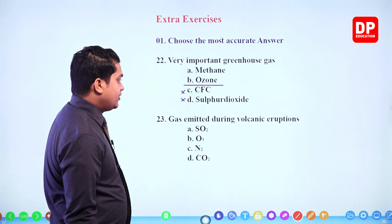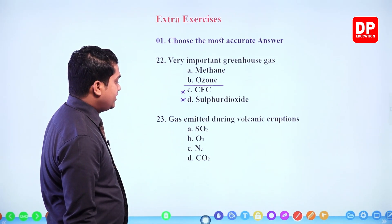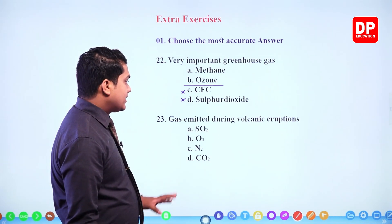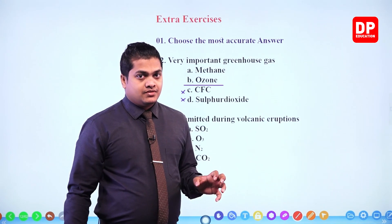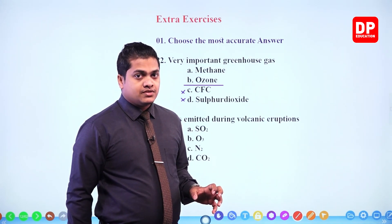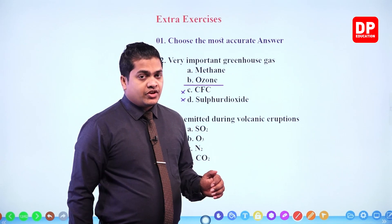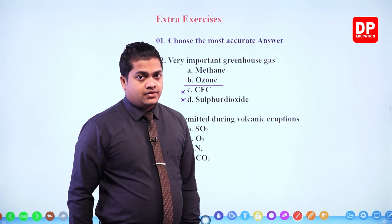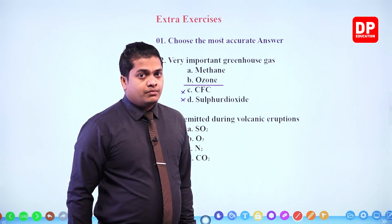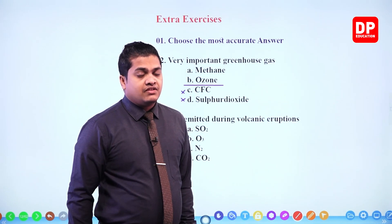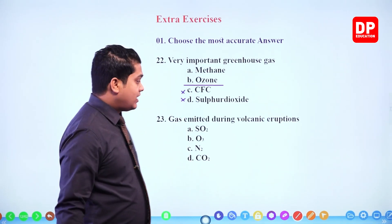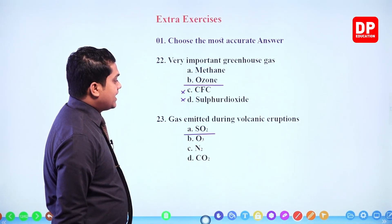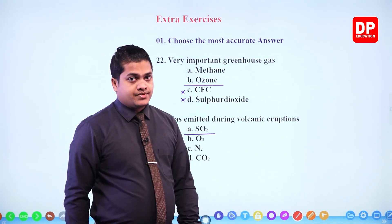Next: gas emitted during volcanic eruptions — sulfur dioxide, ozone, nitrogen, or carbon dioxide. During volcanic eruptions, sulfur can be observed on the walls of a volcano. Because of burning sulfur, sulfur dioxide (SO₂) is the gas that emits. So our answer should be sulfur dioxide.